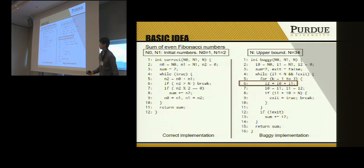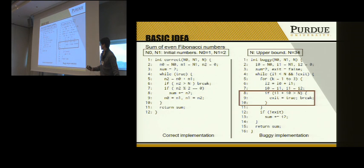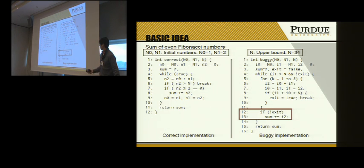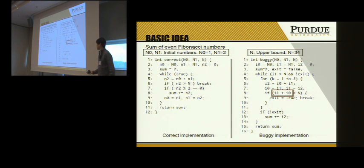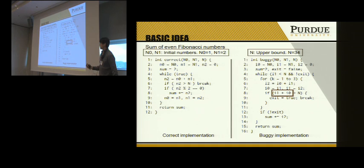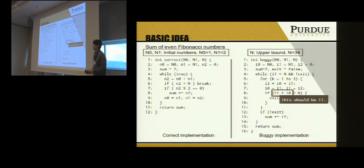The rest of the program is quite similar to the correct one: line six computes the Fibonacci number, line eight checks the upper bound, and line 13 adds to the sum. The actual bug is in line eight — instead of comparing i1 plus i0, the program should compare i1 with n.